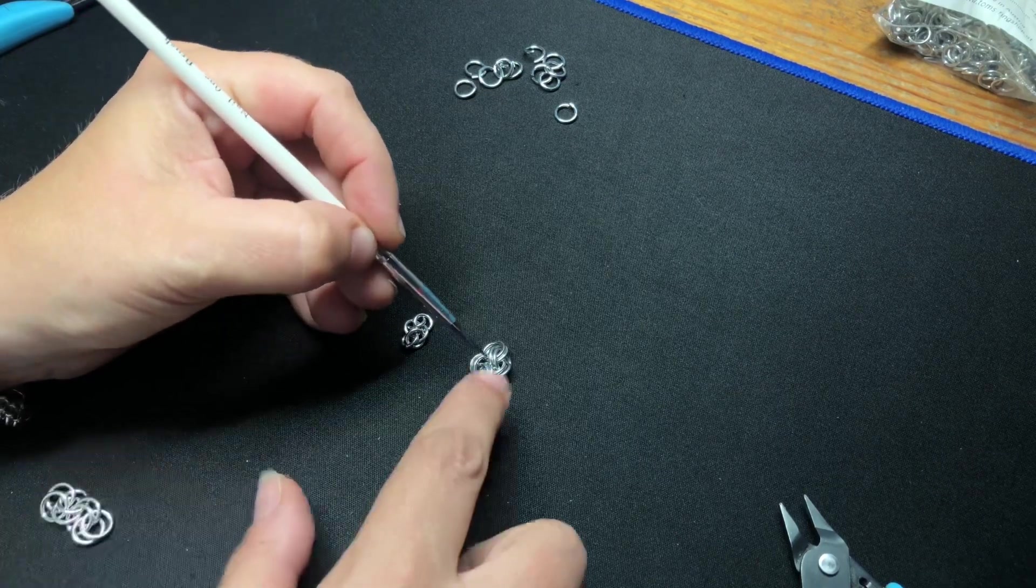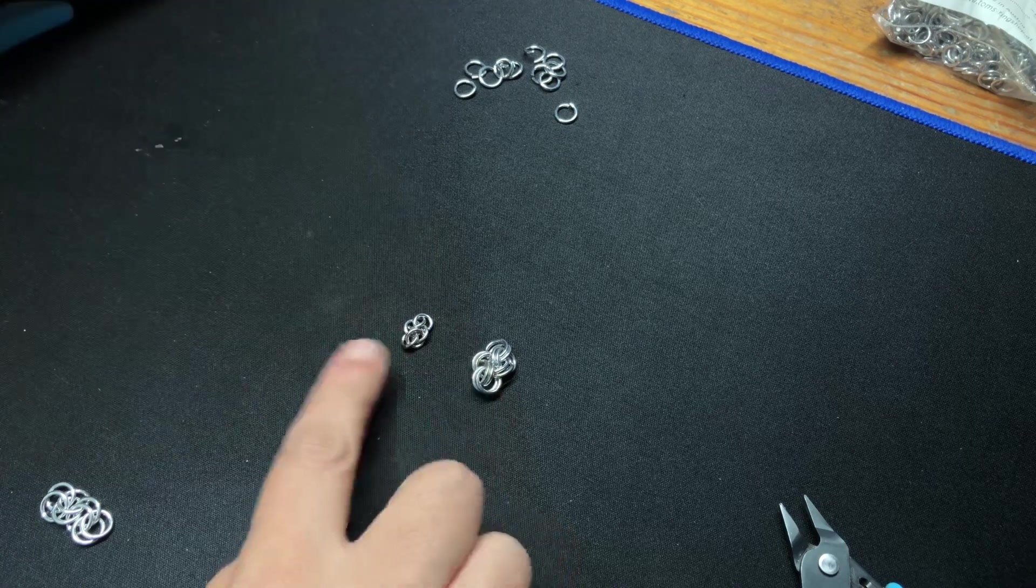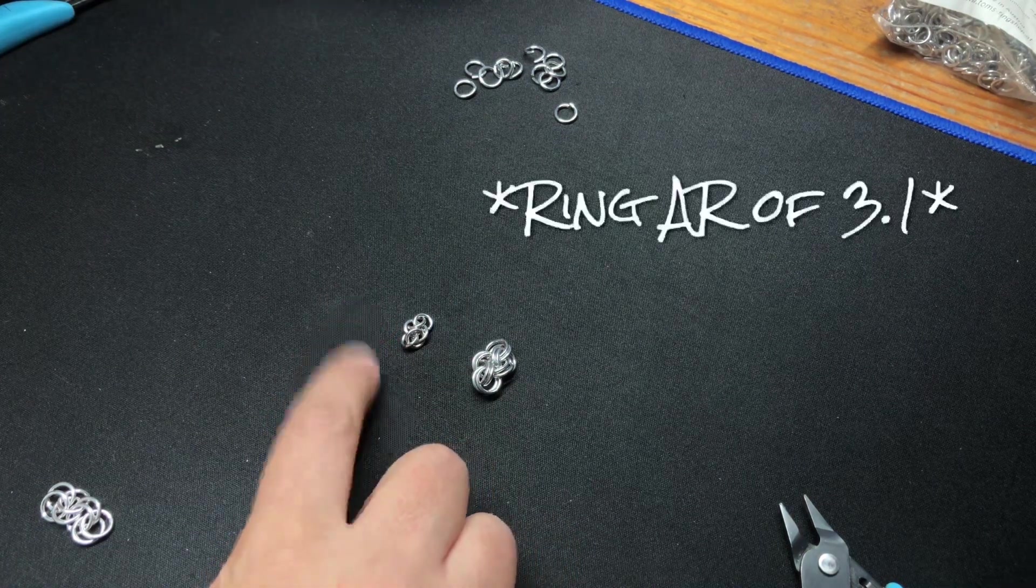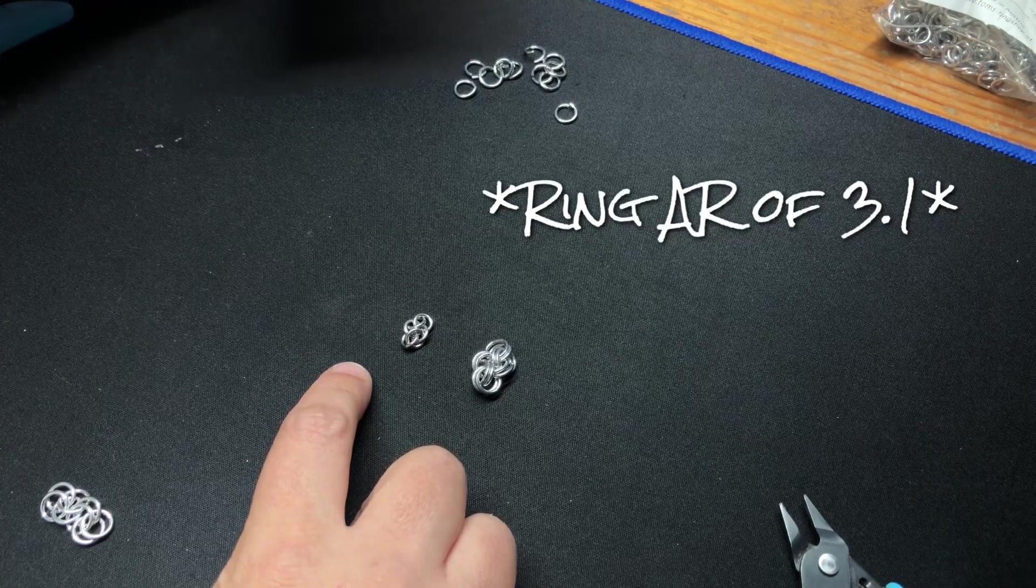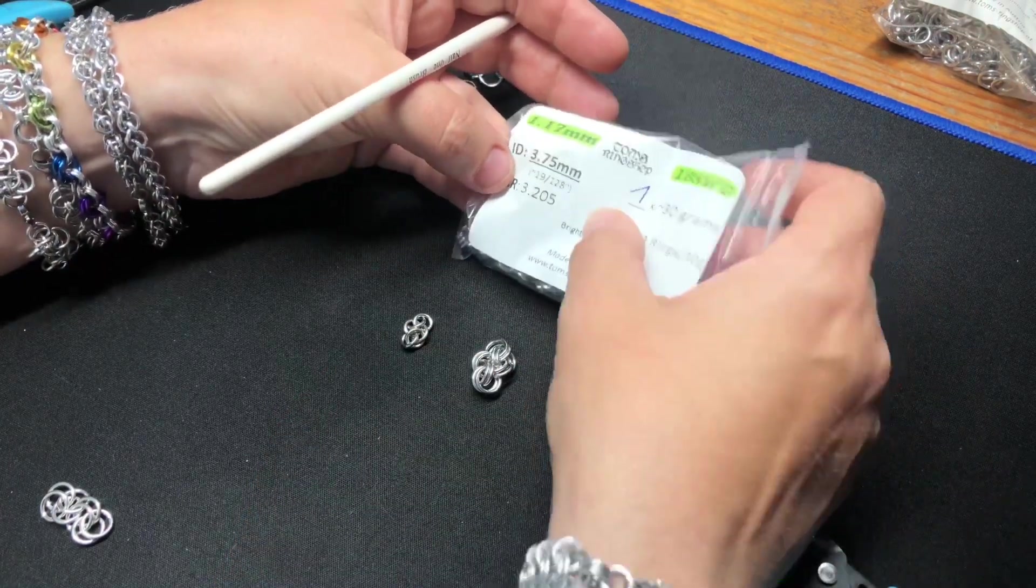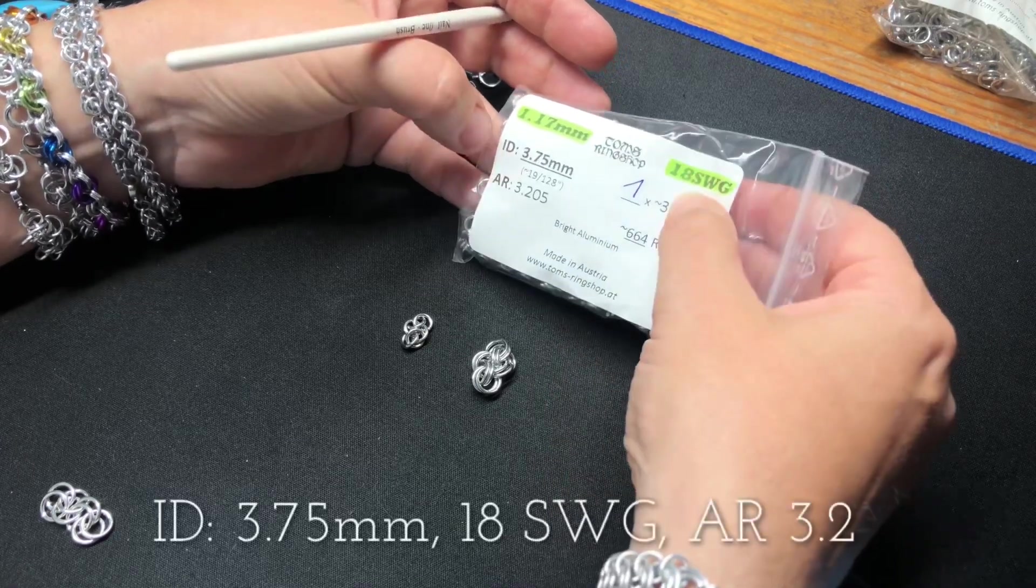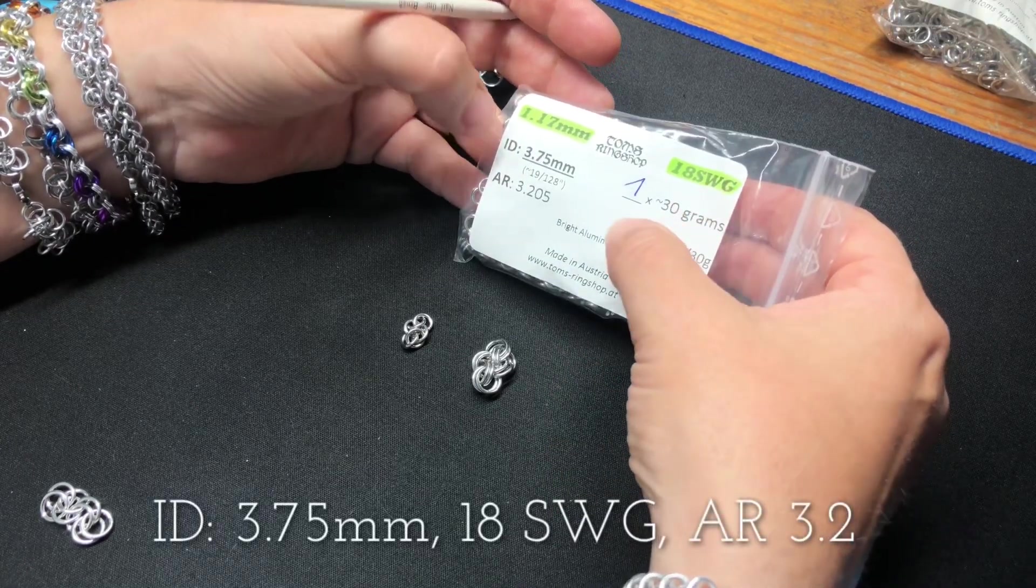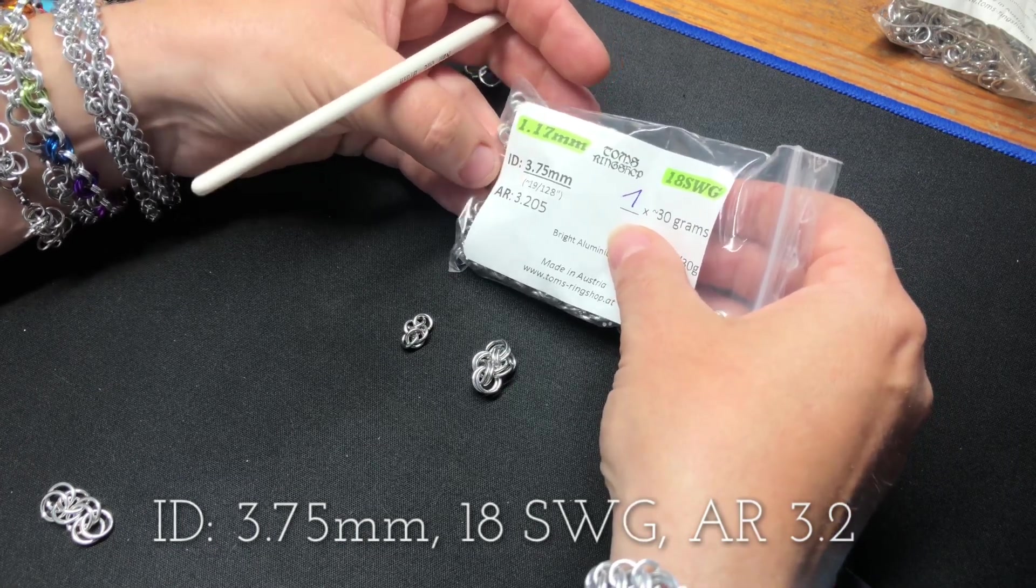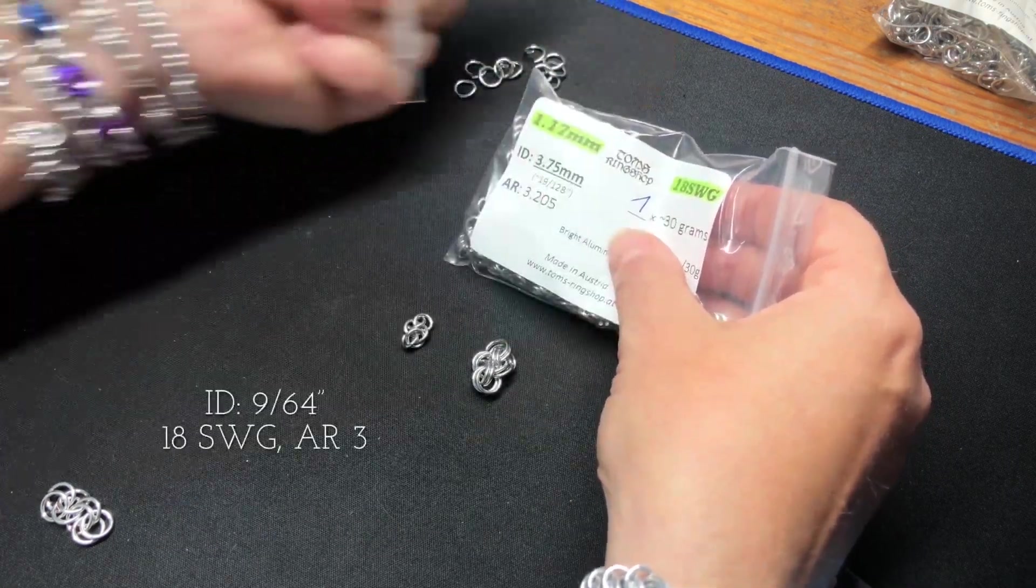Before we can then move on to the kinged version, so the regular cloud cover, the weave says 3.1 on Artisan Mail. Well, I've got a 3.2 which will do, which I'll show you for now. 18 SWG, 3.75 millimeters. I'll put it on the screen now if you want the imperial version.